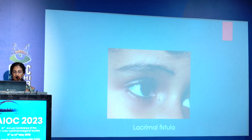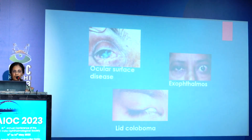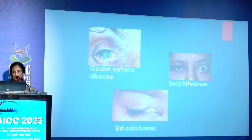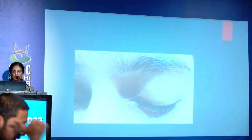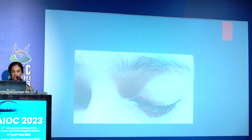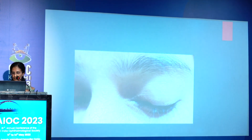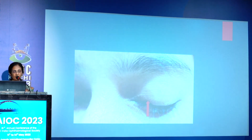Sometimes there will be canalicular fistulas — communication between the canaliculus and the skin. Ocular surface diseases like pemphigus, Stevens-Johnson syndrome, dry eye, coloboma, and exophthalmos can all cause watering. This patient came with a history of watering after varicella infection six months back. Syringing was patent in this girl. While closing the eye, you can notice a notch — a coloboma — that was causing an epithelial defect and that was the cause of watering.